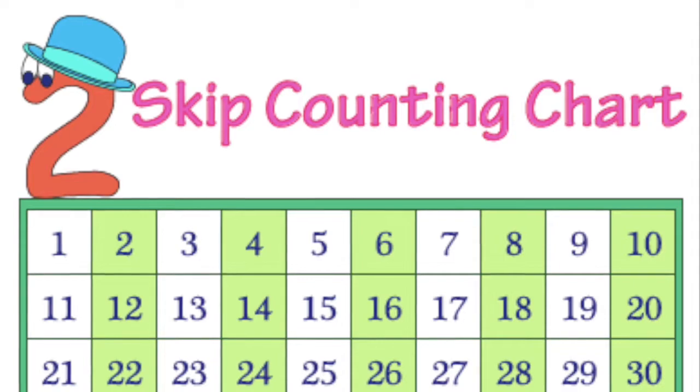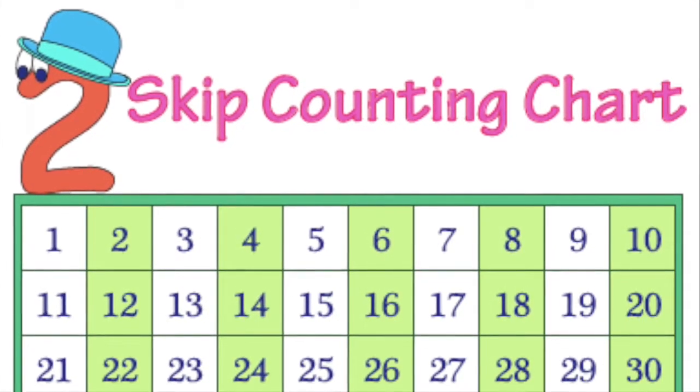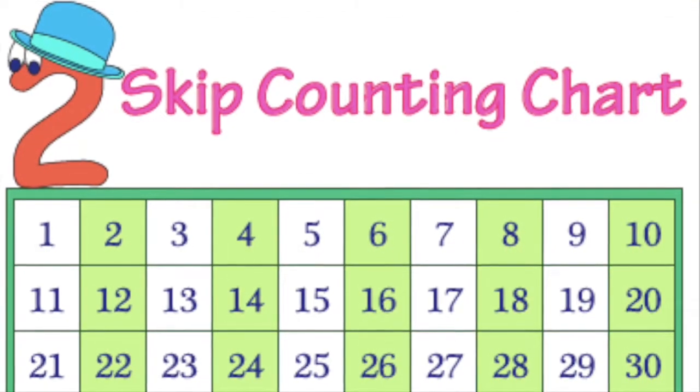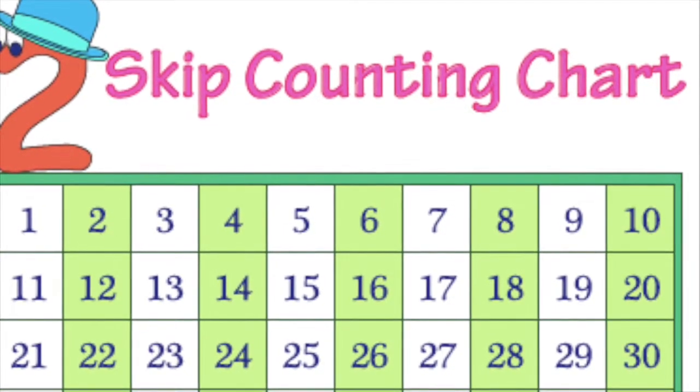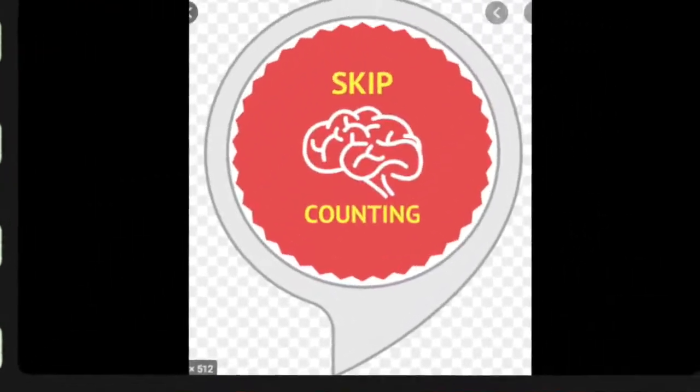So start with 2's and count up to 22: 4, 6, 8, 10, count everybody 12, 14, 16, 18, 20. Skip counting.